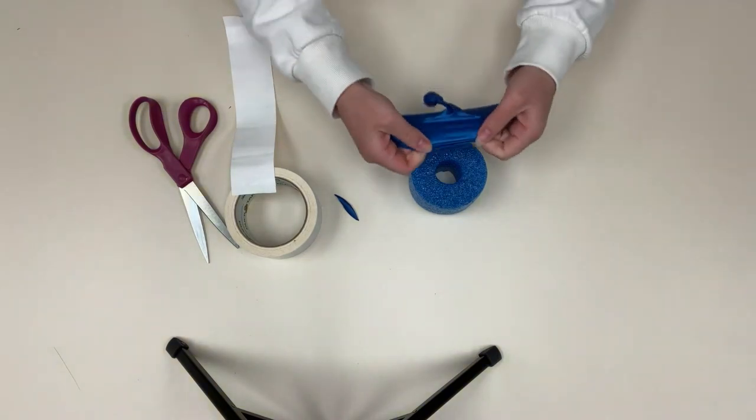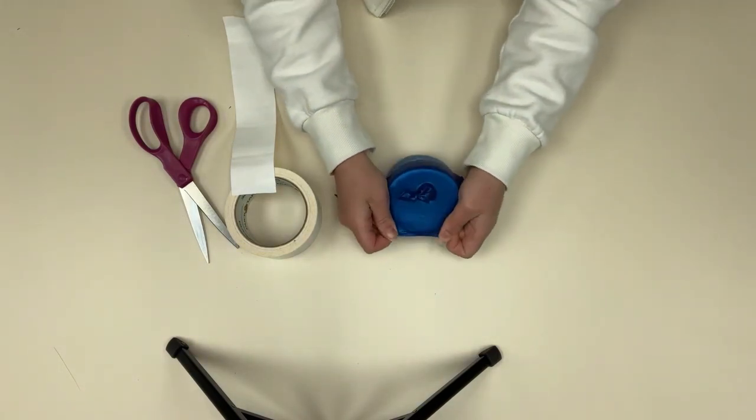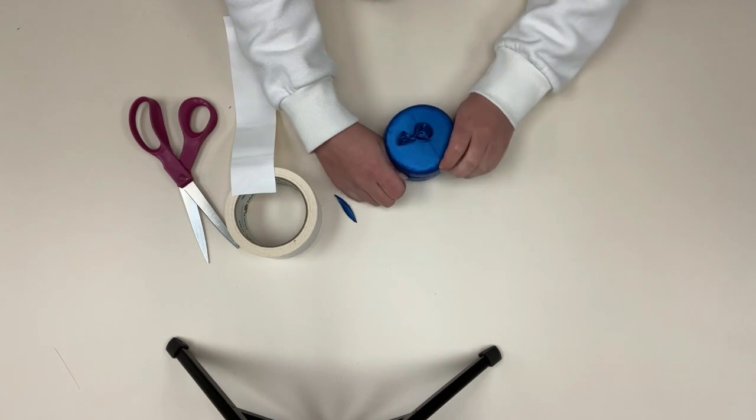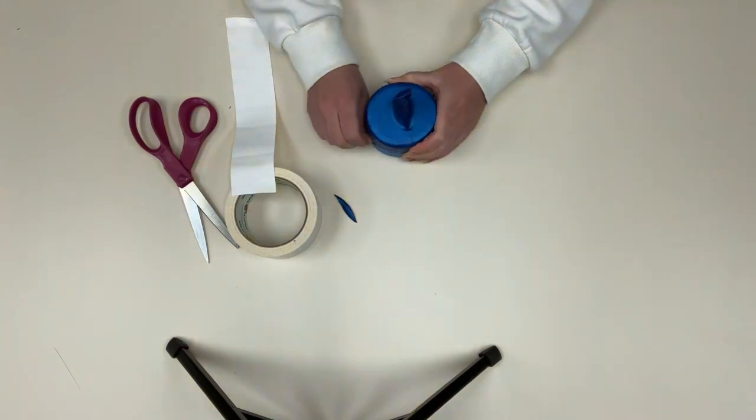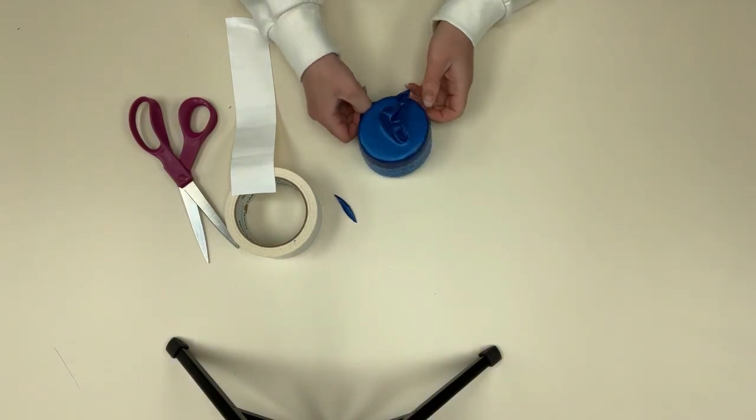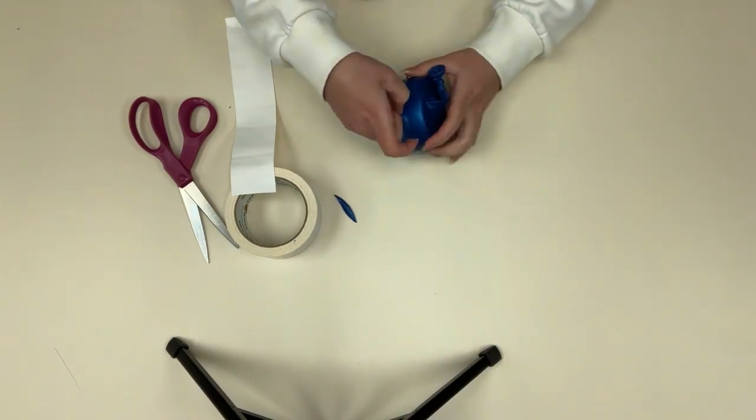Now we will stretch the balloon around one end of the pool noodle. Once you have the balloon pulled down, secure it with the tape.